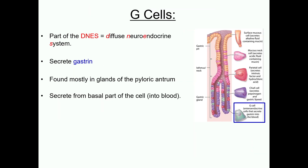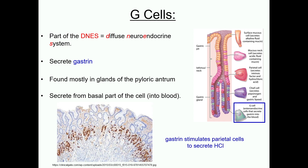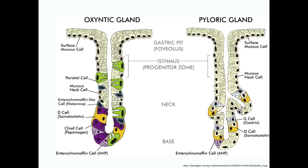G-cells are one example of an enteroendocrine cell. As discussed before, these cells secrete gastrin. They are normally found in the glands of the pylorus. As seen in this section of pyloric antrum stained for gastrin, they are secreting into the blood, and they act on parietal cells primarily in the body and fundus of the stomach.